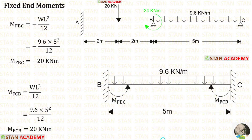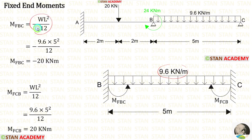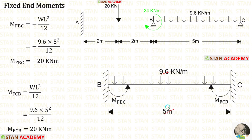Now let us find the fixed end moments in span BC. There is a uniformly distributed load of 9.6 kN per meter acting for the full span. The formulas are −WL²/12 and +WL²/12. Here W is 9.6 and L is 5. Applying these values, we get M_BC and M_CB.